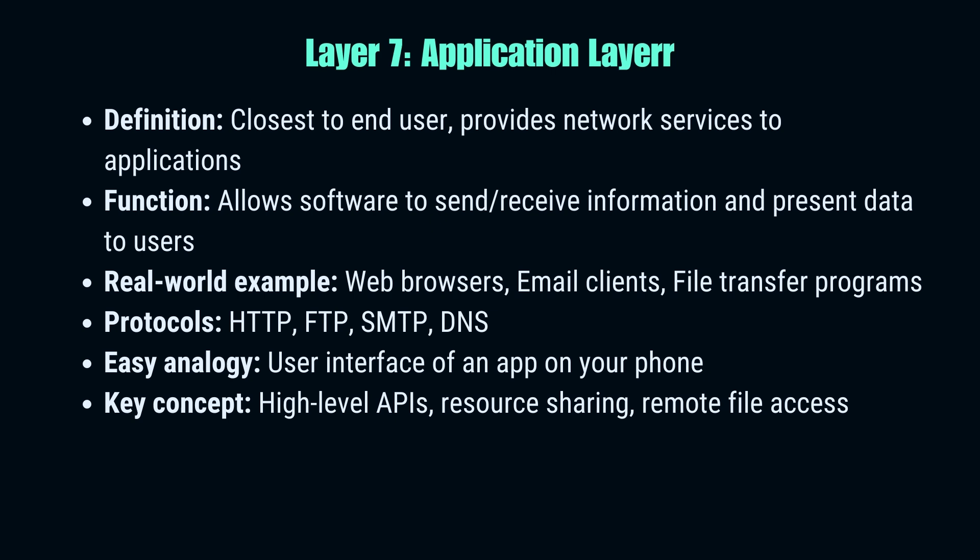Finally, we reach the application layer — the one we interact with most directly. This layer provides network services directly to end-user applications. Your web browser, email client, and other internet-connected applications work at this layer. It's responsible for identifying communication partners, determining resource availability, and synchronizing communication. Protocols like HTTP, FTP, and SMTP operate here. The application layer is where the user interacts with the network, making it the most visible part of our networking stack — the icing on our layer cake, the cherry on top of our networking sundae.